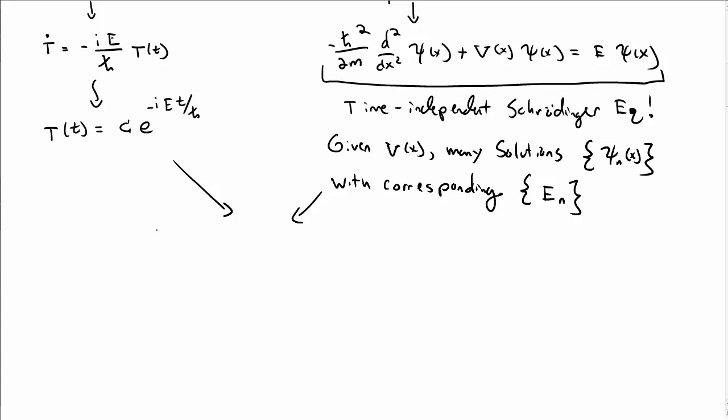So putting these two together, the total solution to the time-dependent Schrödinger equation takes the form capital Ψ equals little ψ sub n of x, whatever that is, times e to the minus i E_n t over ℏ.